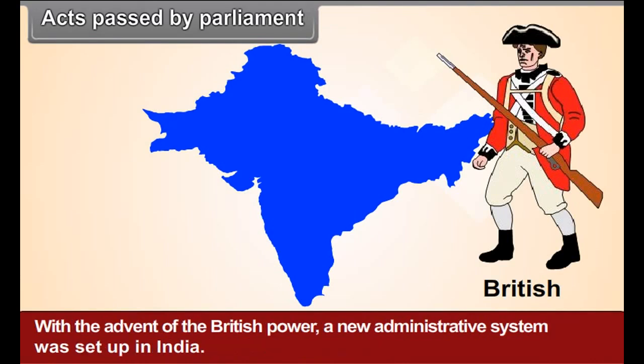With the advent of the British power, a new administrative system was set up in India. The civil service, the military, the police force and the judiciary were the main pillars of the British administration in India.